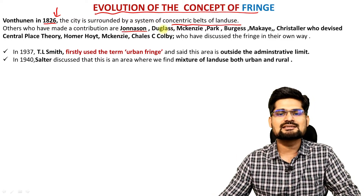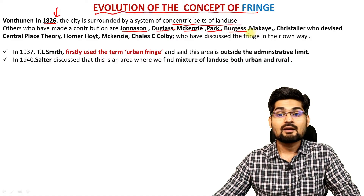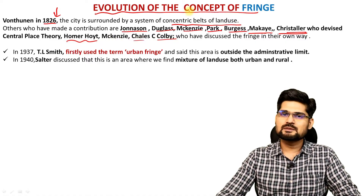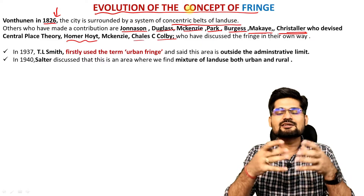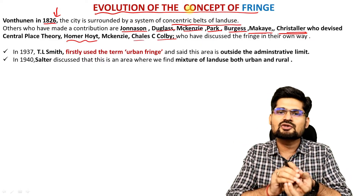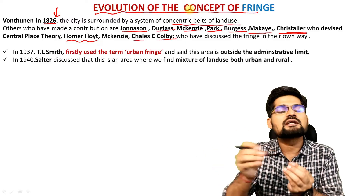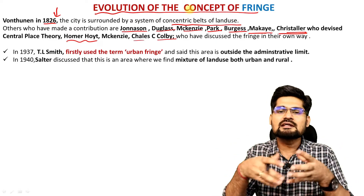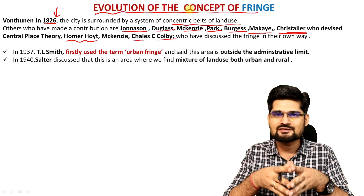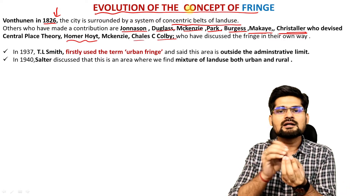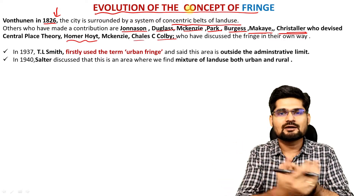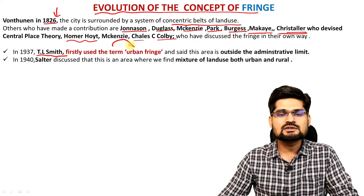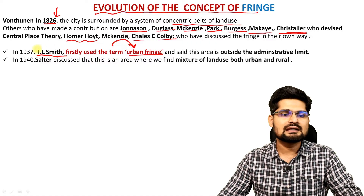Further scholars like Jonathan, Douglas, McKinsey, Park, Burgess, McKay, Christaller, Homer Hoyt, Charles Colby and many others discussed some kind of association of the core urban area with its peripheral zone in terms of extension of services, provision of market, and provision of various other economic, health, and education services. What we see is the core urban area starting to have a linkage with its peripheral zone. T.L. Smith is credited with using the word 'urban fringe' for the first time in 1937.